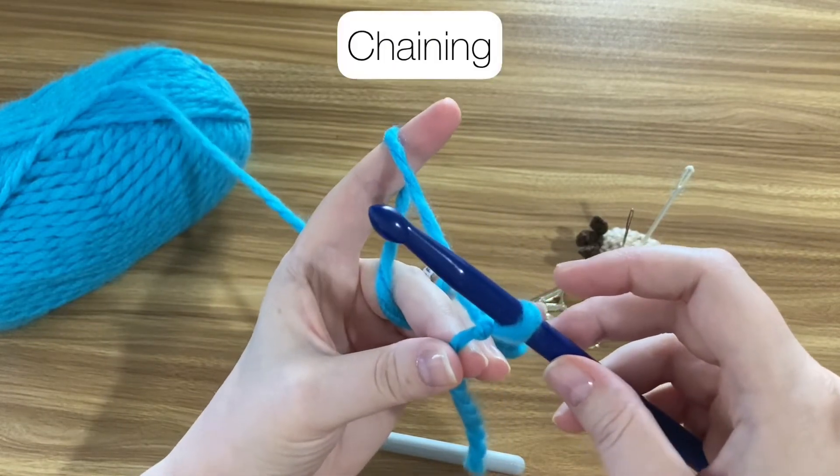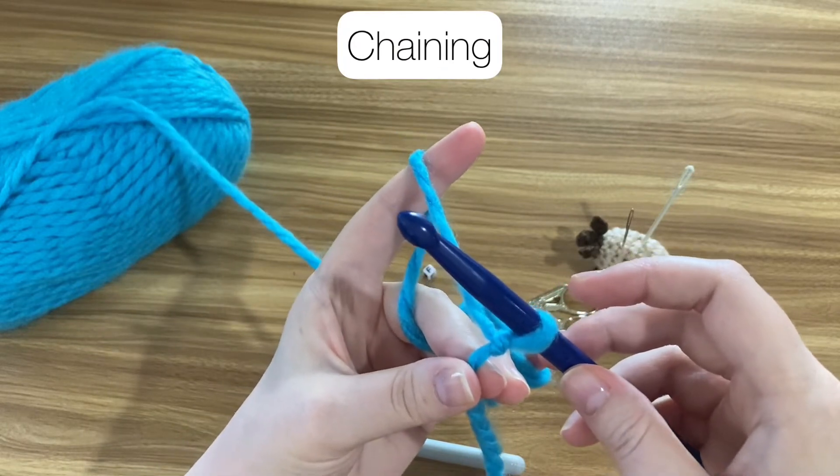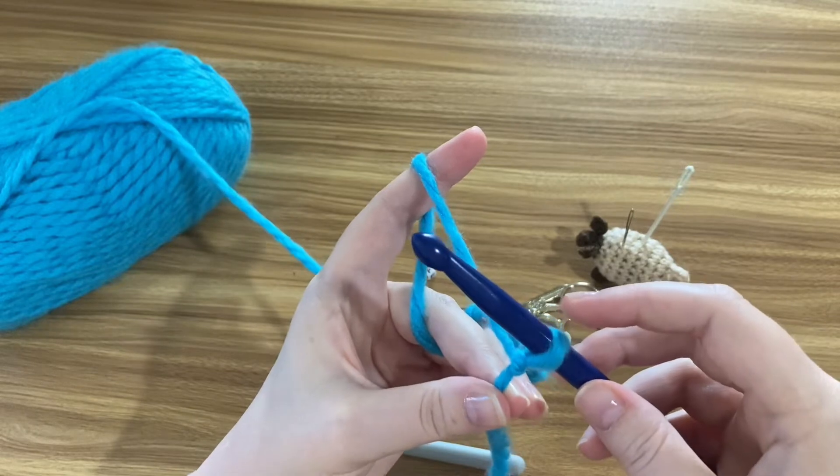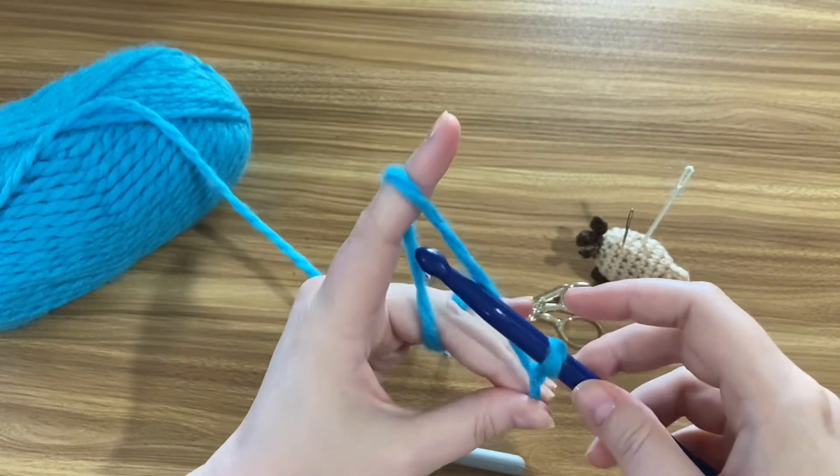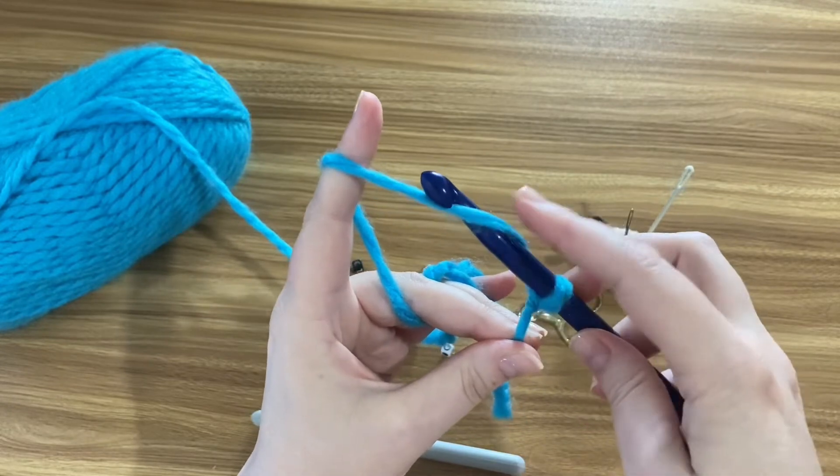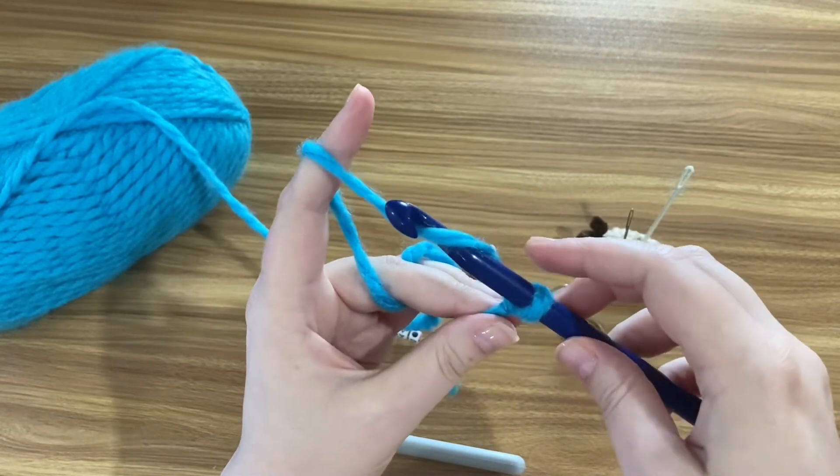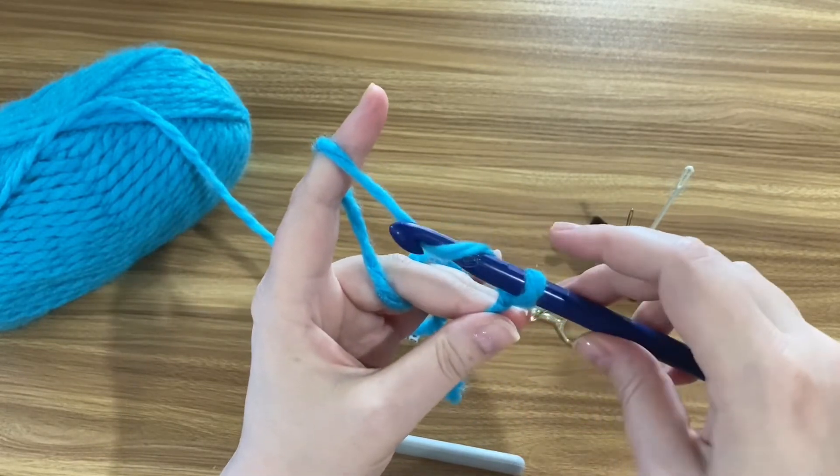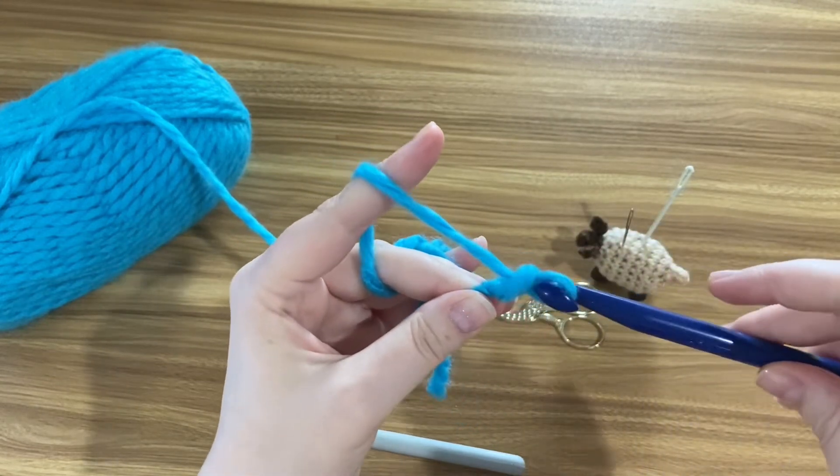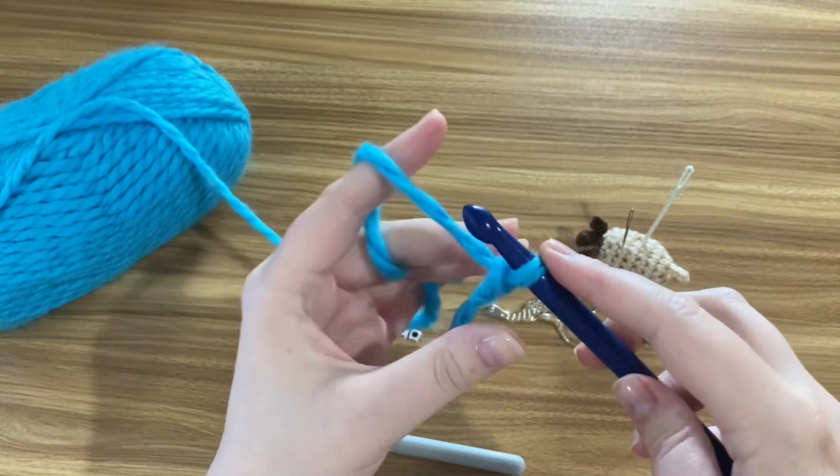Step three, chaining. A chain is the simplest crochet stitch and it's the only stitch you'll need to know to make the bracelet. Let's get straight into it now. Yarn over, which means bring the yarn from the back of the hook to the front, then rotate the hook so its sharp bit is pointing down and use the hook to pull the yarn through the working loop. That's called chaining.